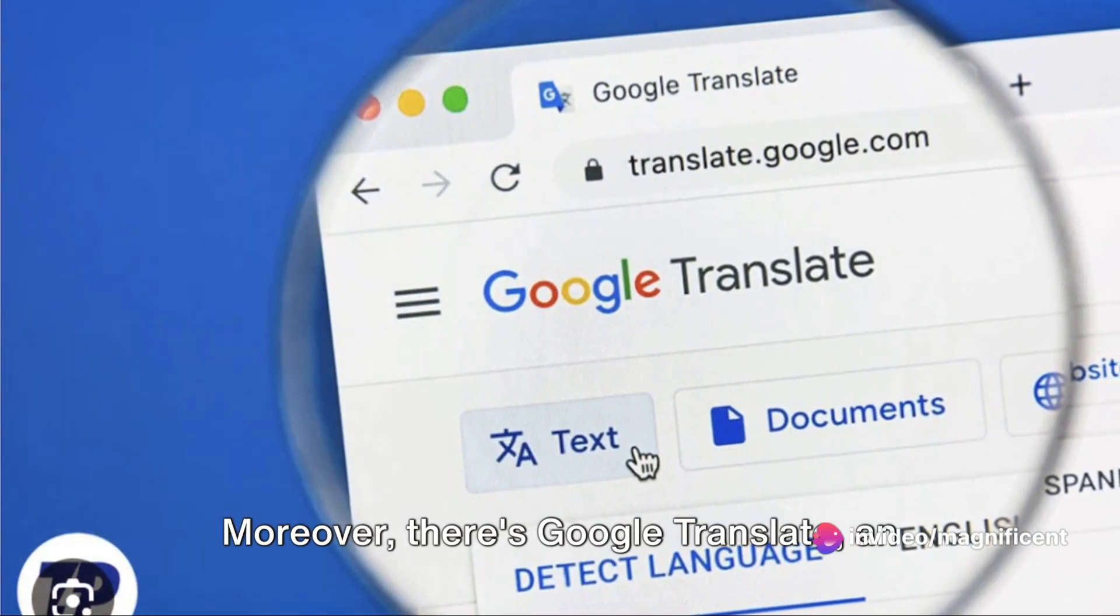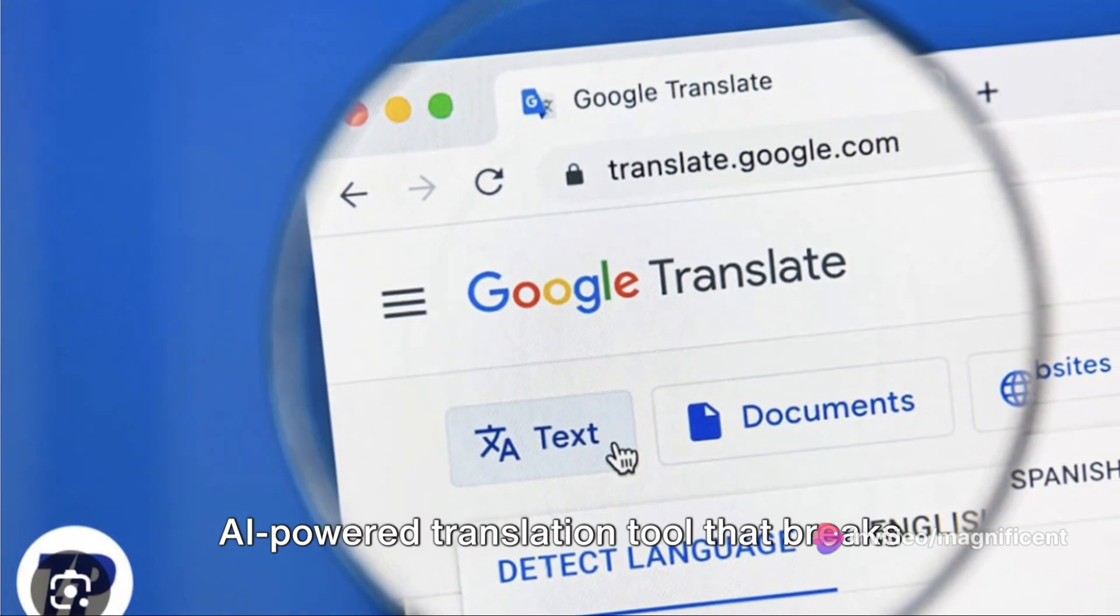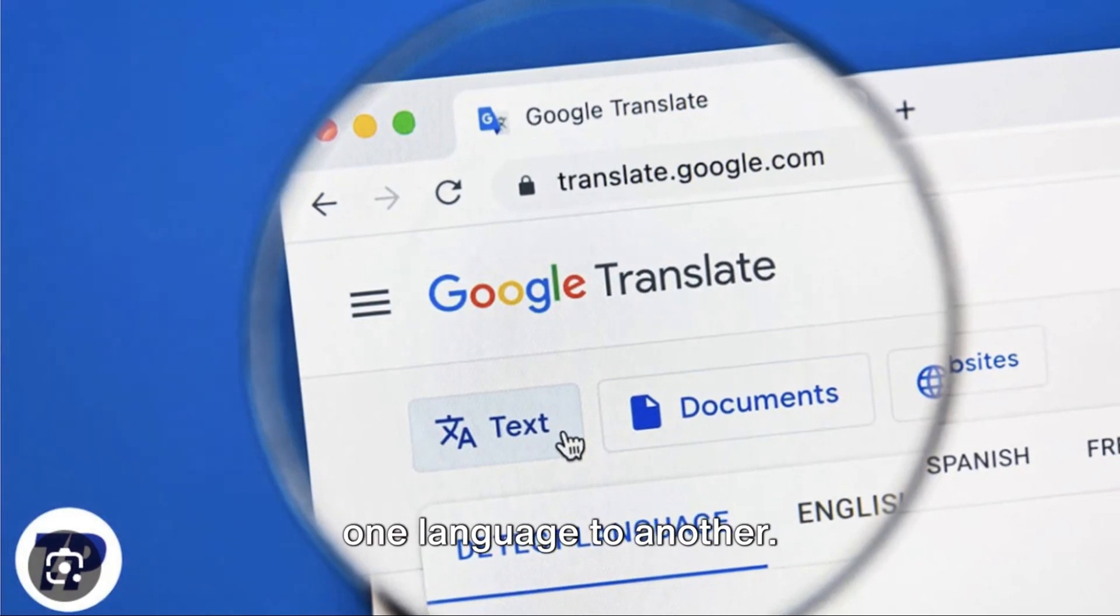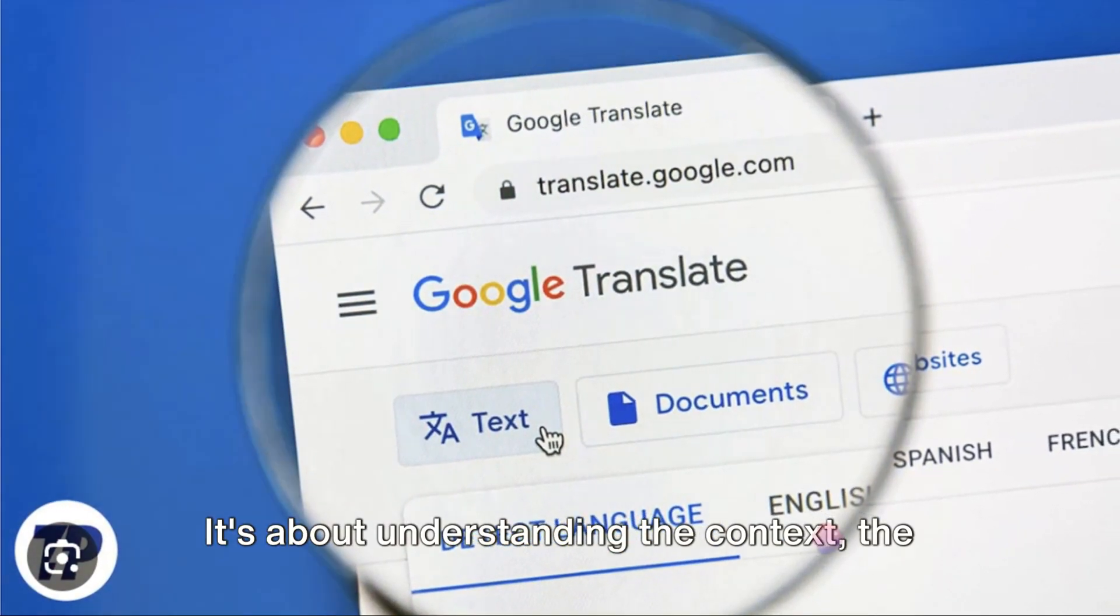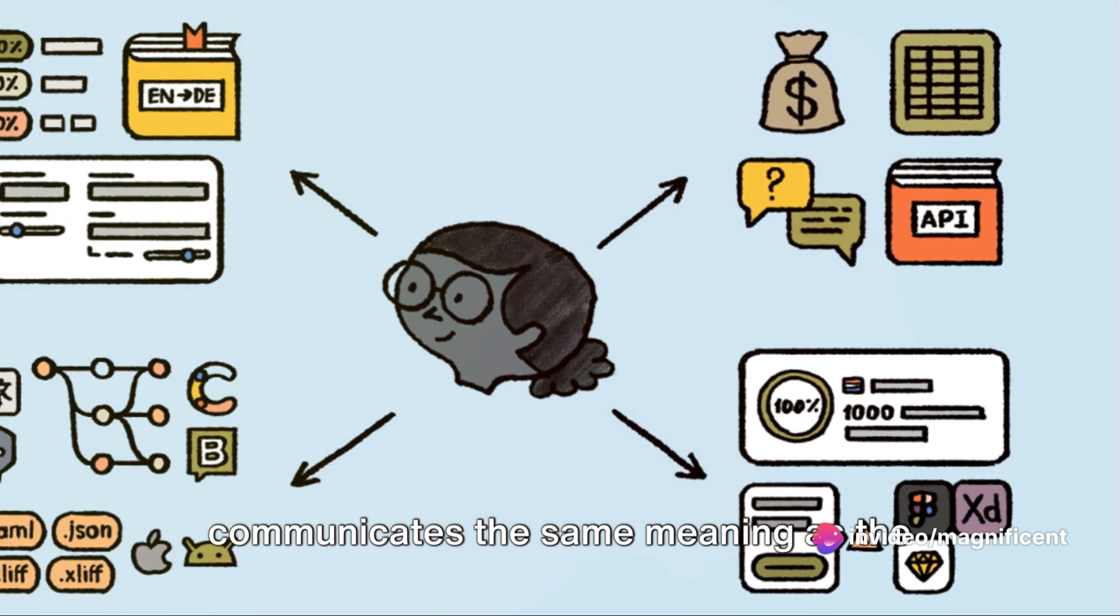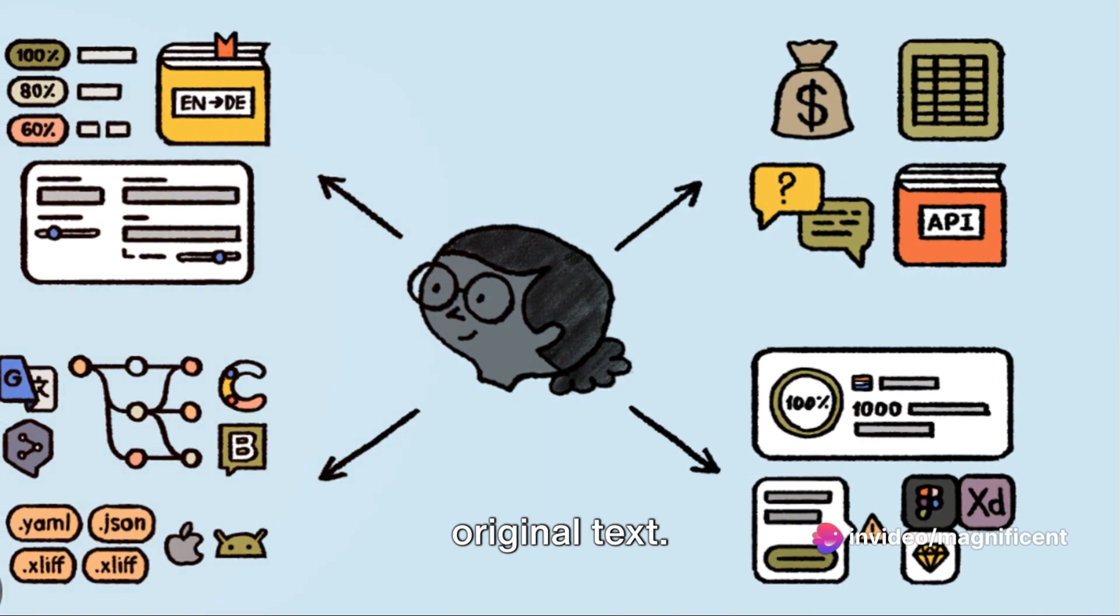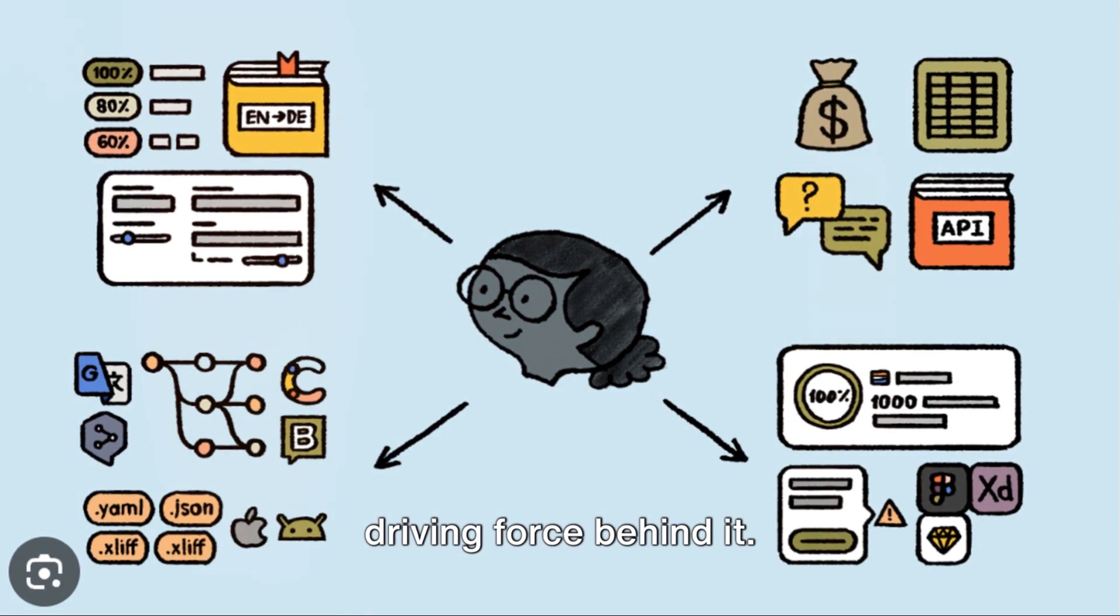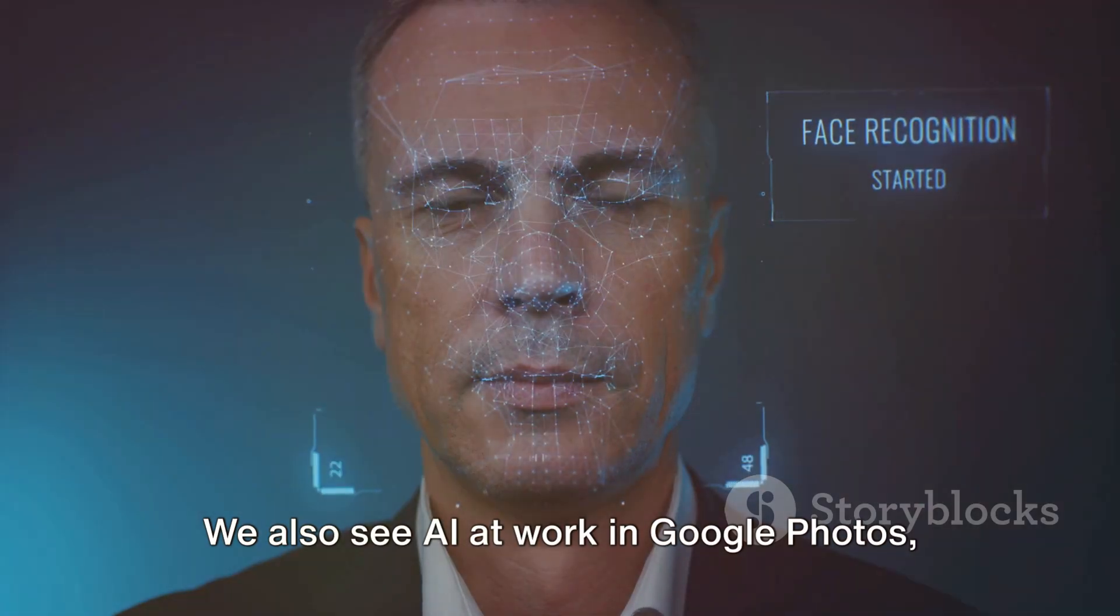Moreover, there's Google Translate, an AI-powered translation tool that breaks language barriers. It's not just about converting words from one language to another, it's about understanding the context, the nuances, and delivering a translation that communicates the same meaning as the original text. This is a colossal task, and AI is the driving force behind it.